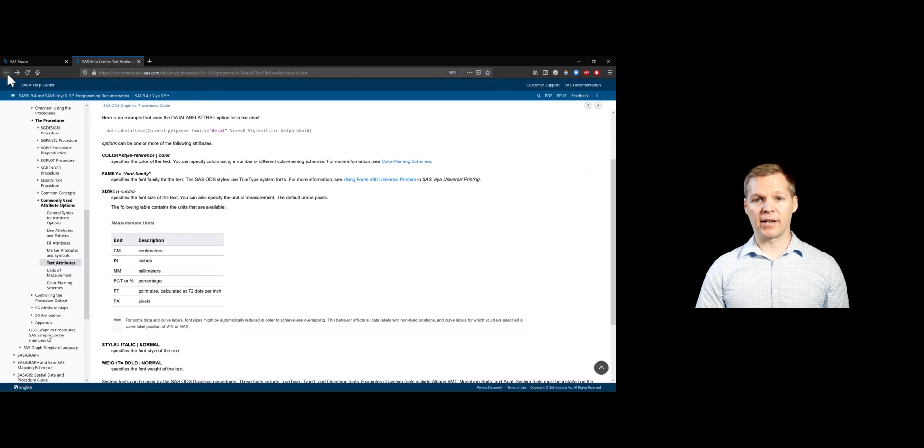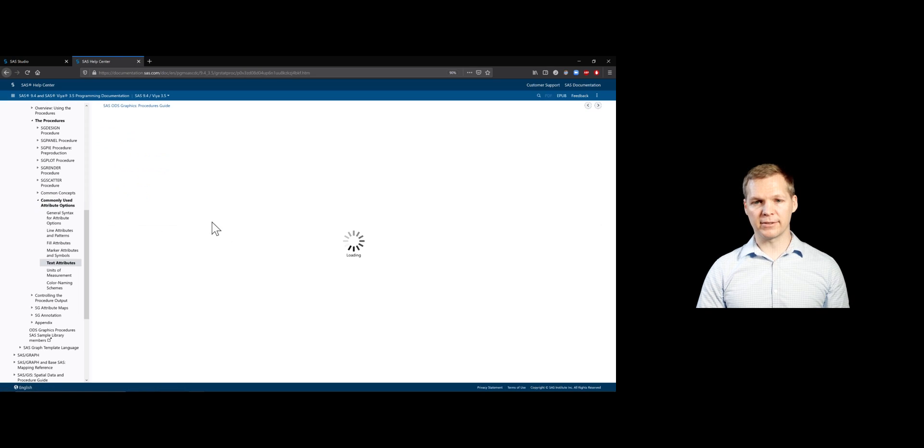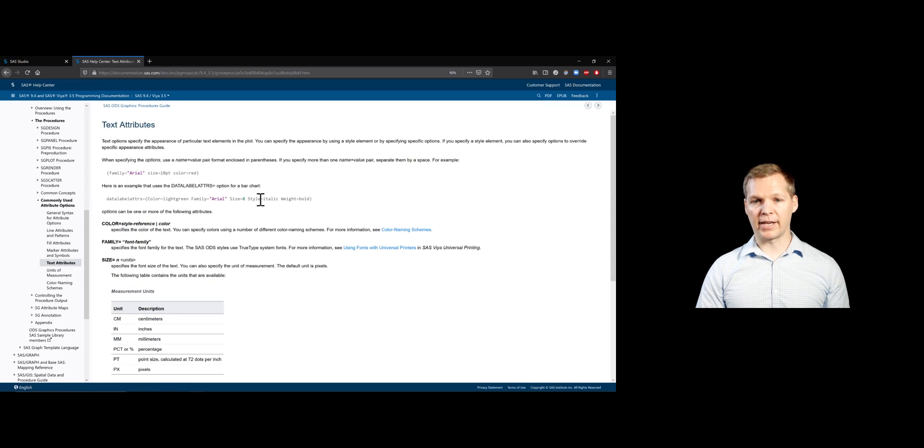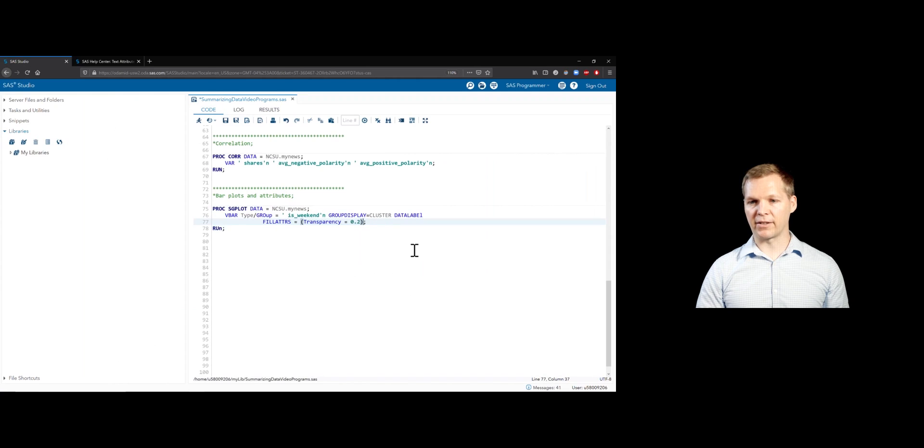Since we have text on our plots now, we can also change what that text looks like. So if I go back over here, I went into the text attributes part down here. So we can change how our text looks. This actually gives us an exact example on a bar plot. So instead, if you're using data labels on your bar plot, you can add this option for that. And let's just copy that exactly how it is and put it in there.